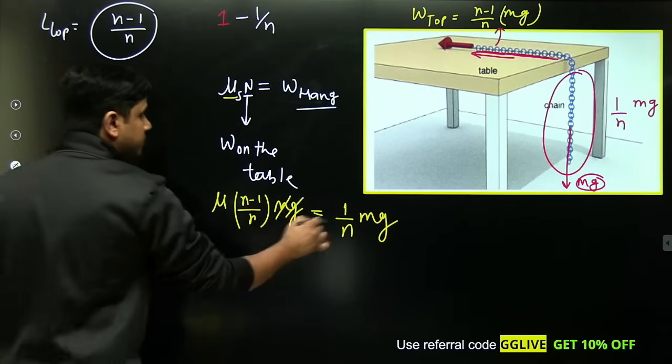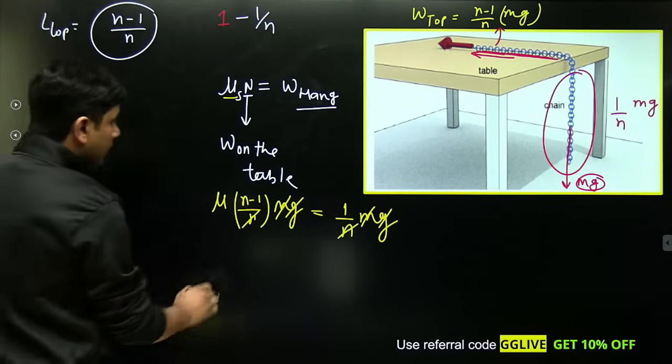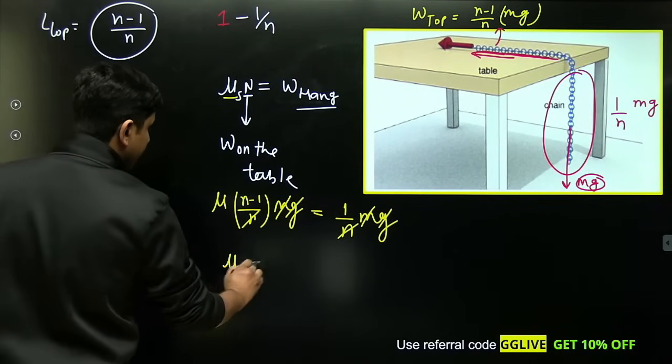Now you'll see mg on both sides cancels, this n and this n also get cancelled. You'll get the answer: μ equals 1/(n-1), that's it.